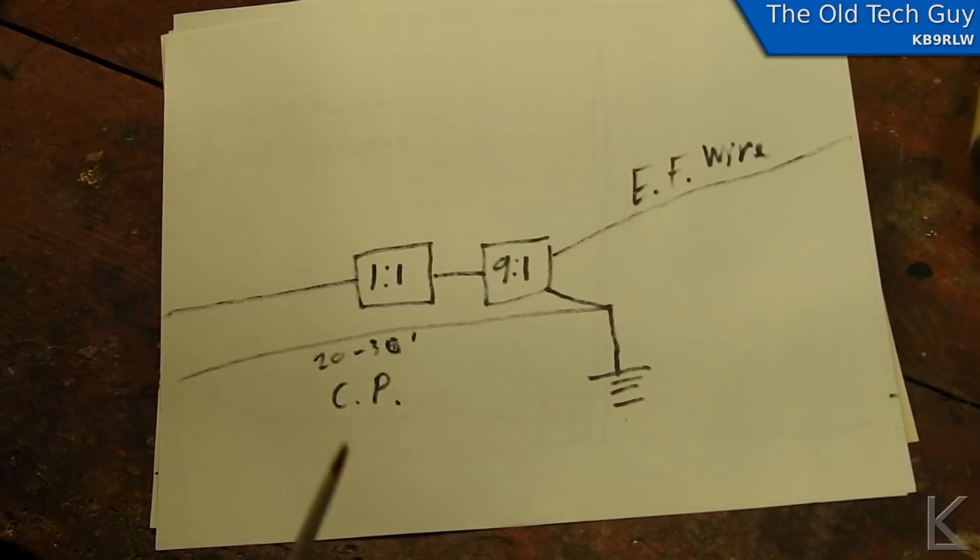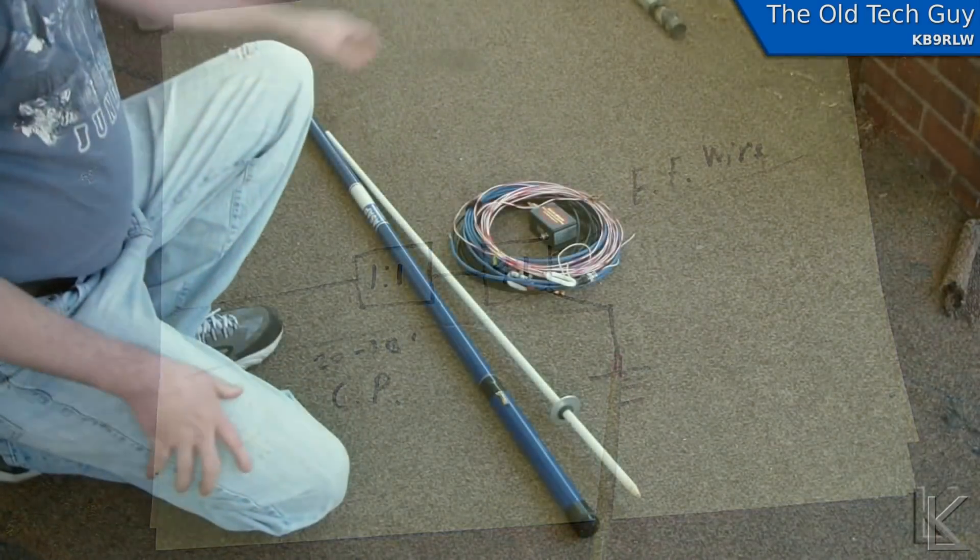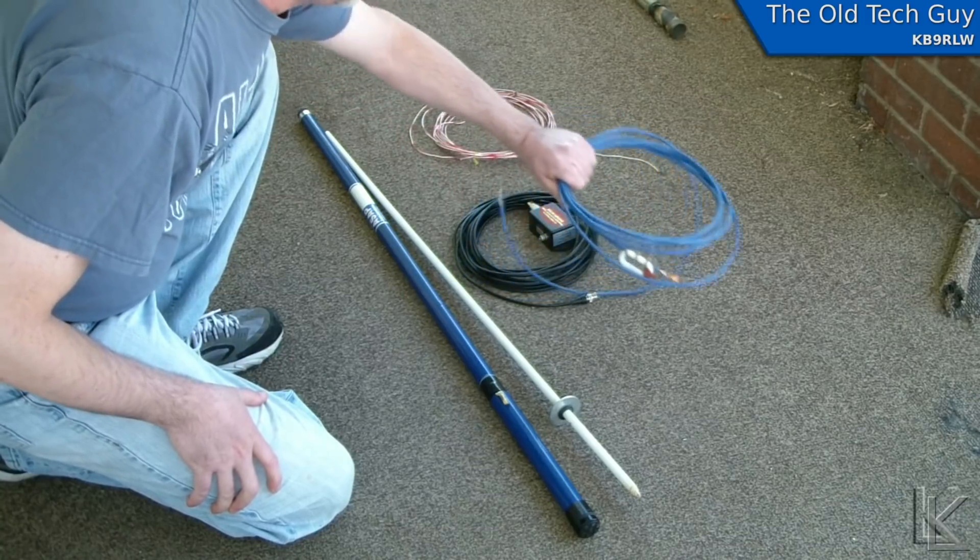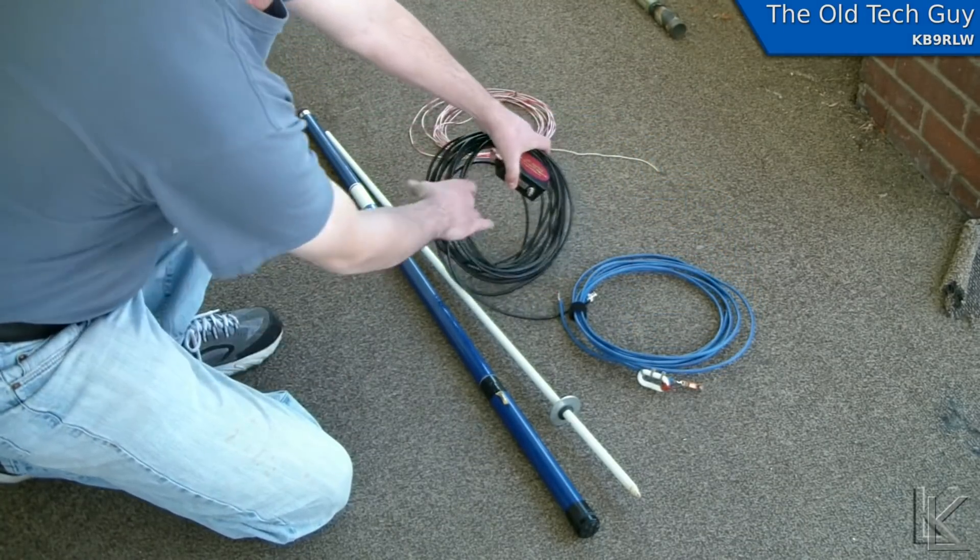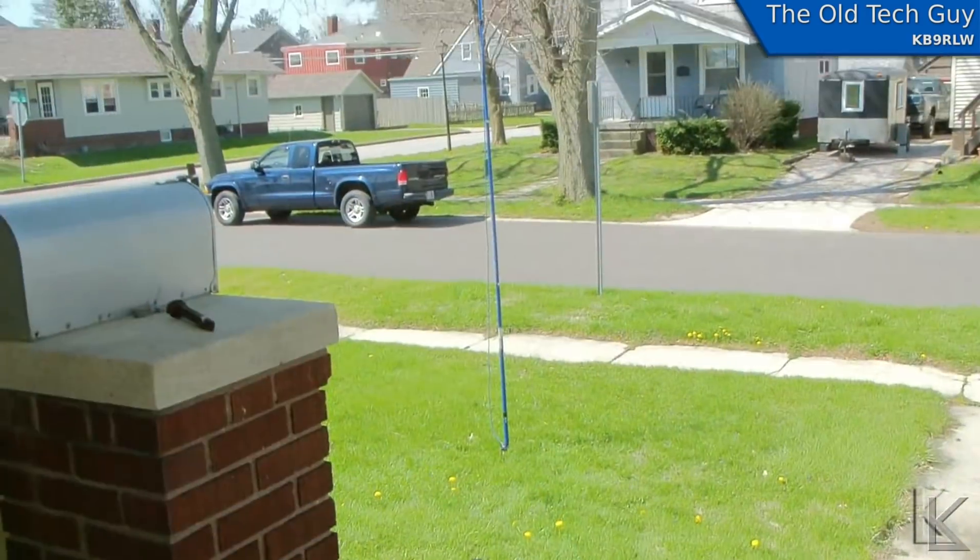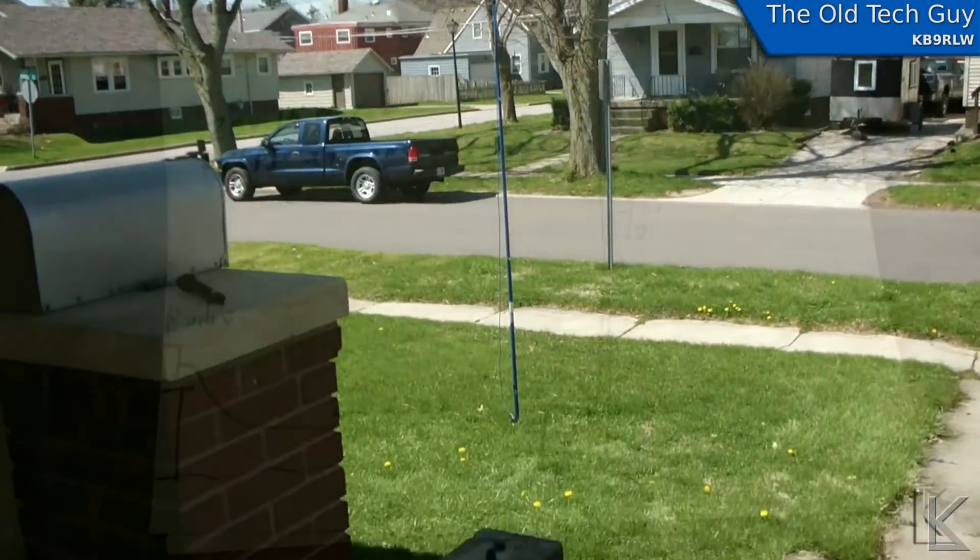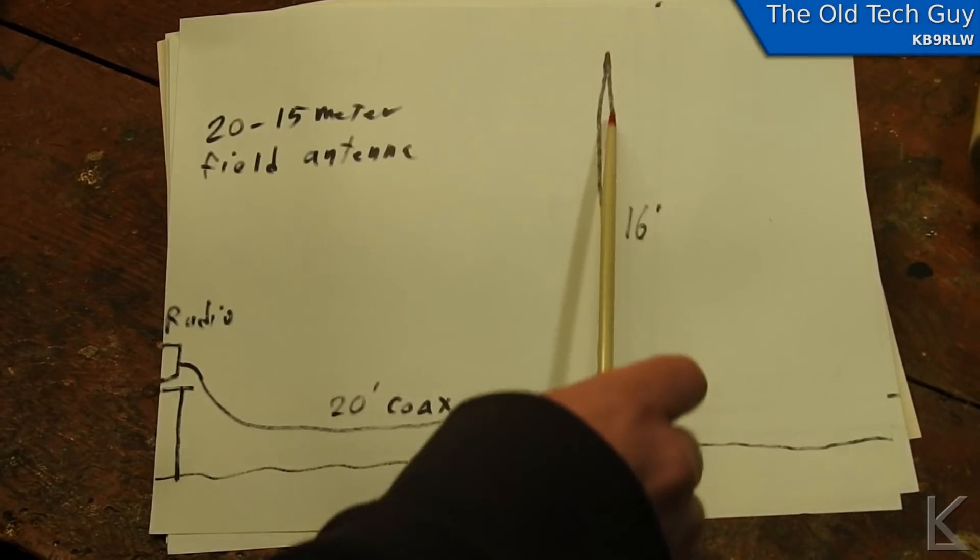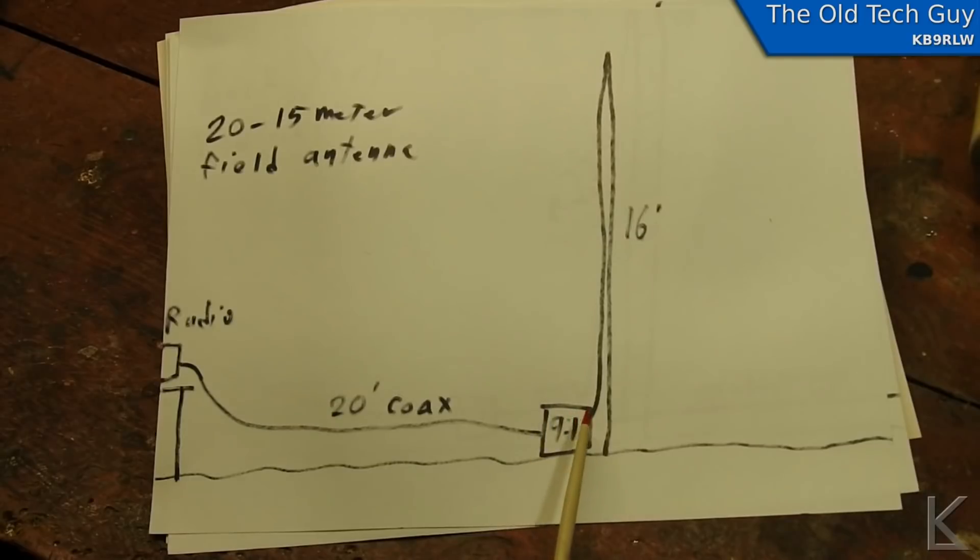About two and a half years ago, I did a field vertical for 20 through 15 meters. The video is quite old and really looks terrible compared to my current production standards, which are still not great. But my 20 to 15 meter field antenna was simply a 9:1 at the ground level, a 16-foot or 15-foot mast with about 16 feet of wire going straight up and about 20 feet of coax going back to the radio.